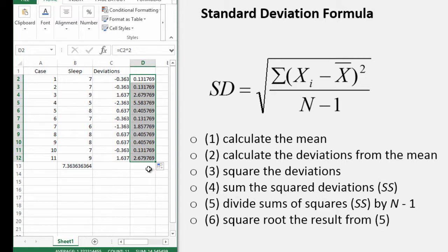Sum the squared deviations. Let's do that with the equal sum d2 to d12. Now we've got 14.54. Sum the squared deviations done.